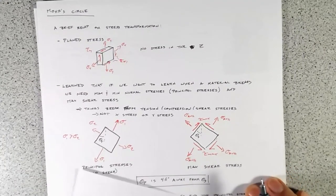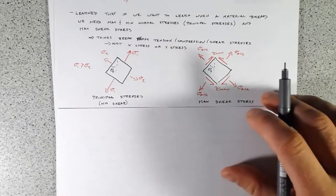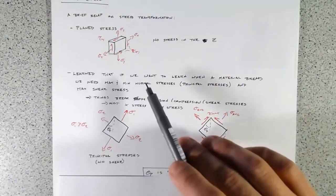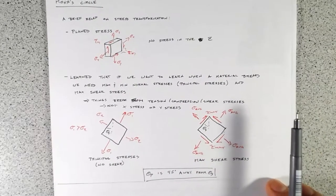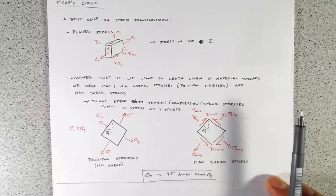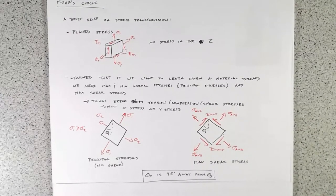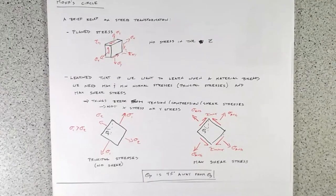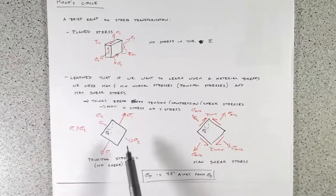We then learned that for plain stress, if we want to find out — well, we looked at the stresses in x and y — but that's only so useful because materials really break in tension, compression, or shear. They don't break in x stress or y stress. So we need some means to transform the stress state to find our maximum and minimum normal stresses and our maximum shear stress.